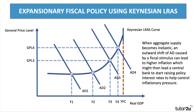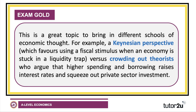Using AD/AS analysis to help your answer is a terrific way of getting excellent analysis marks. Make sure your diagrams are fully labelled — axes, curves, equilibrium — and develop the diagram a little further rather than drawing just a basic one. This is also a great topic to bring in different schools of economic thought. Keynesian economists favour fiscal stimulus when the economy is stuck in a liquidity trap and monetary policy is no longer really working. Crowding out theorists argue that higher government spending and borrowing can raise interest rates and squeeze out productive private sector investment. And modern monetary theory argues that government borrowing can be easily financed by printing money, providing inflation remains relatively stable. It's well worth having a view on one or two of these perspectives, alongside your examples, to help build great evaluation.